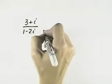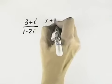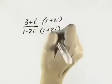So when we have two terms with a radical in the denominator, we multiply by the conjugate, which is 1 plus 2i. But we always need to do the same thing to the numerator as the denominator.